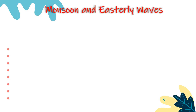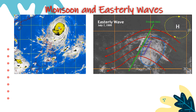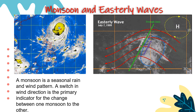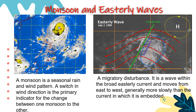Let's look at the differences between monsoon and easterly waves. Monsoon is a seasonal rain and wind pattern — a switch in wind direction is the primary indicator of the change between one monsoon and another, so it happens only in a certain season. Easterly waves, on the other hand, are a migratory disturbance — a wave within the broad easterly current that moves from east to west, generally more slowly than the current in which it is embedded. Easterly waves can bring cyclones, cloudy skies, and thunderstorms, while monsoon can bring typhoons. That is what makes them similar.